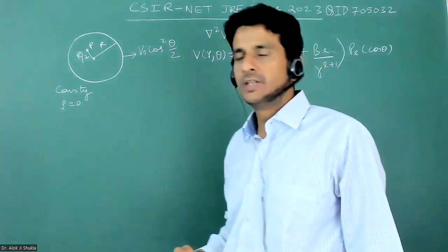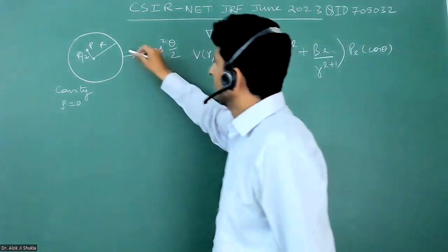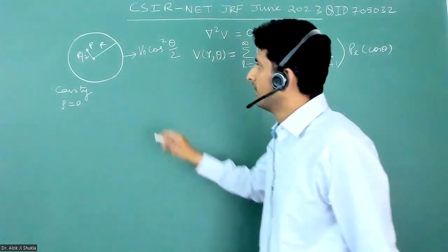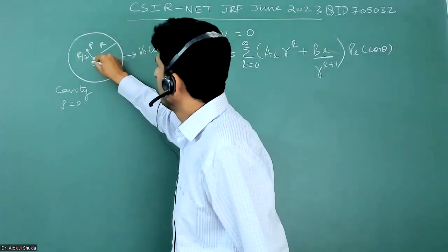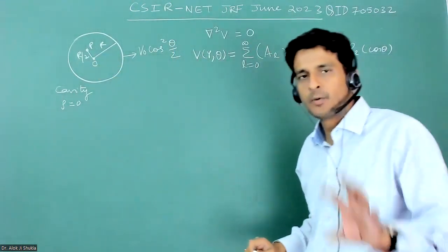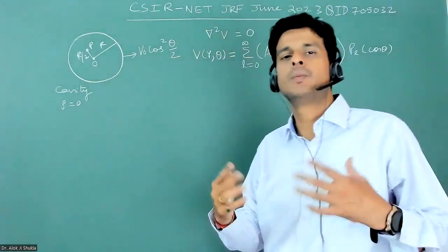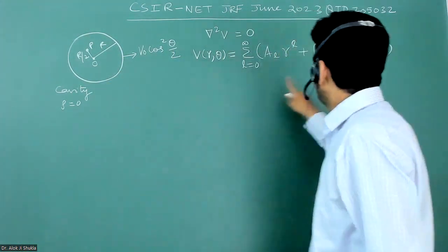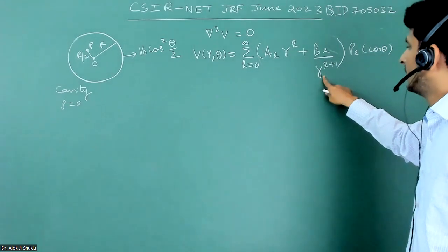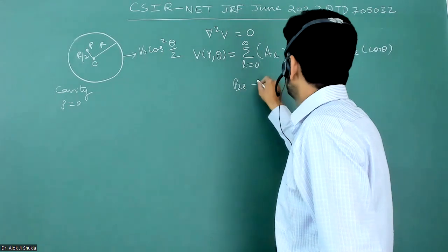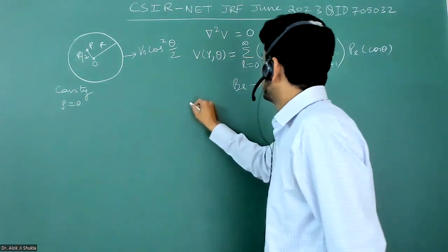This is the potential, and because we want potential in this region at a point in this region, we can also come to the origin. The potential should be such that at origin it should be finite. At origin this blows, so the boundary conditions suggest that BL should not exist, it should go to 0.